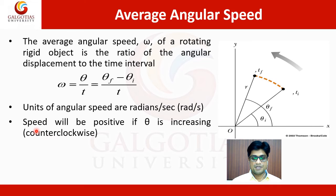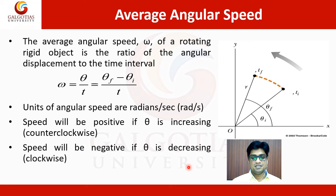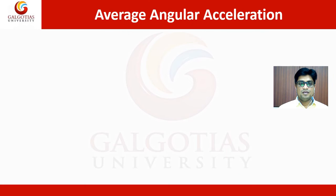The angular speed will be positive if theta is increasing, meaning the motion is counterclockwise, and negative if theta is decreasing, meaning the motion is clockwise. In this way we can estimate the average angular speed of any circularly moving object.